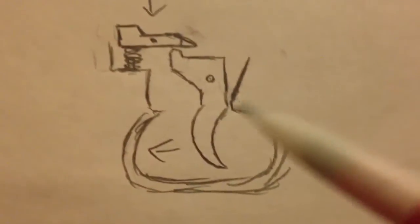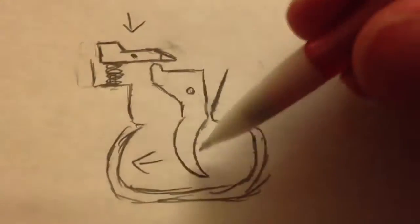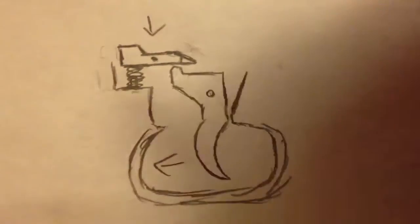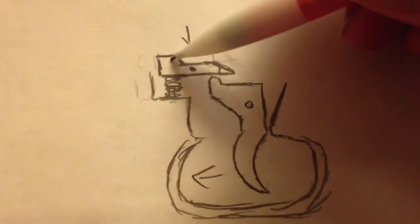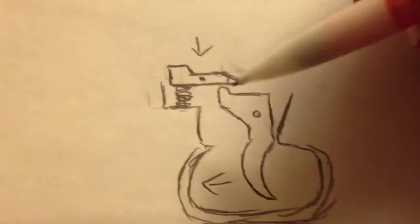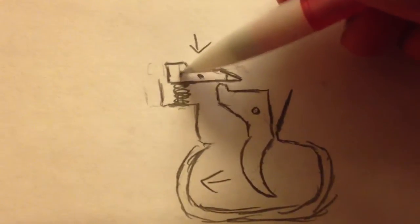Now the sear is shaped this way for a very specific reason, and I'll show you that in a bit. Basically, you'll pull the trigger, which will make this rotate up, pushing up on this, which will make that side go down onto the spring, making this go down.